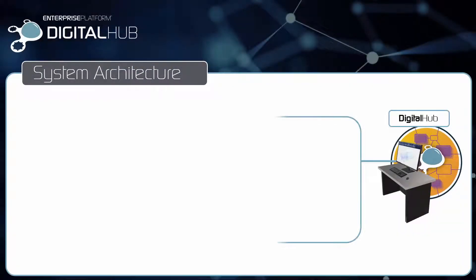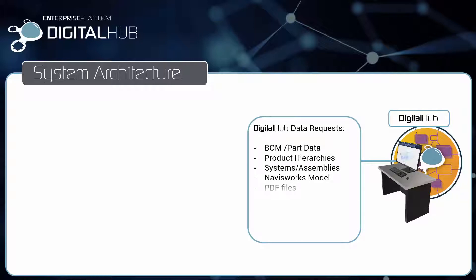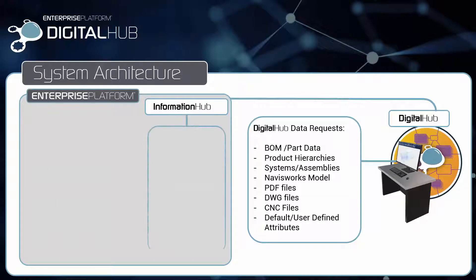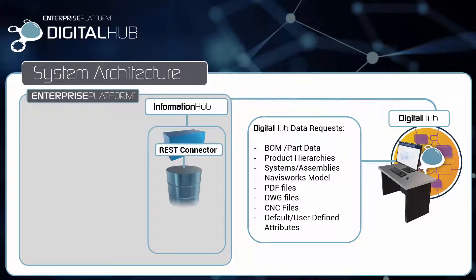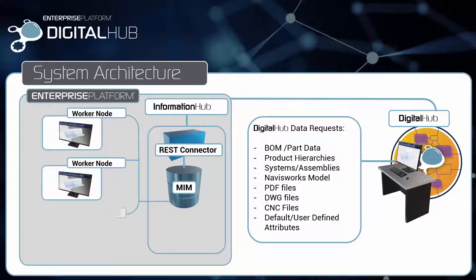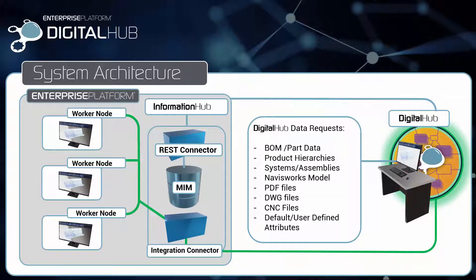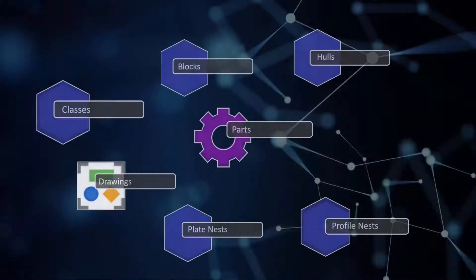Digital Hub interacts with the Enterprise Platform Information Hub, which then works in conjunction with ShipConstructor to access the Marine Information Model to create user-defined outputs. A request for information from the ShipConstructor Marine Information Model is allocated to Enterprise Platform Worker nodes, who are in turn tasked with generating the required product data for Digital Hub. This is an automated, behind-the-scenes process that allows these tasks to be load balanced across multiple network nodes, greatly enhancing end-user productivity while at the same time reducing processing loads locally.